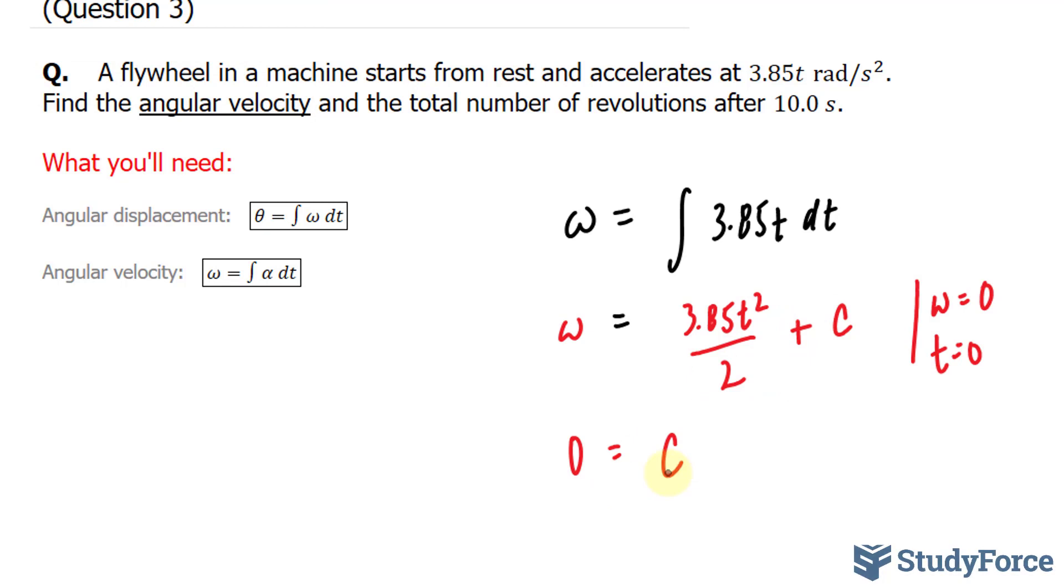Next what I'll do is take the integral of 3.85 t to the power of 2 over 2, and this will give me the angular displacement function. That relationship is shown right here. So angular displacement is represented by theta equals the integral of 3.85 t squared over 2 dt.